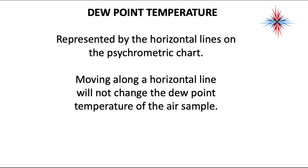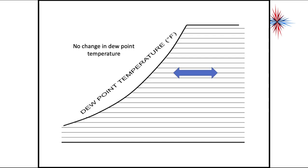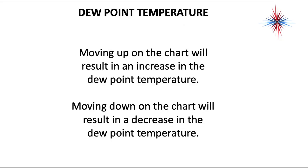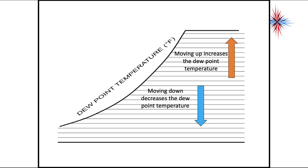Dew point temperature is also represented by the horizontal lines on the psychometric chart — the same horizontal lines as moisture content. It is also known as saturation temperature sometimes. Moving along a horizontal line will not change the dew point temperature. Moving up on the chart increases the dew point temperature, and moving down decreases it. Going straight across left to right does not change anything.